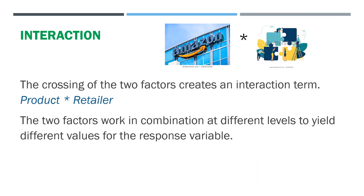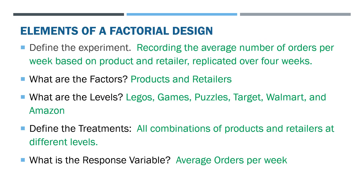The factorial experiments will test for interaction. We create an interaction variable by crossing two factors such as product and retailer. There's a command in JMP that will cross these variables. The two factors work in combination at different levels to yield different values for the response if there's truly interaction. The experiment itself is recording the average number of orders per week based on product and retailer, replicated over four weeks.